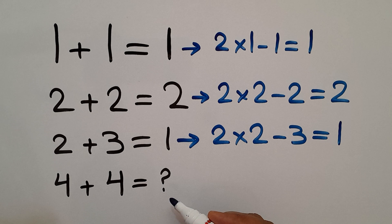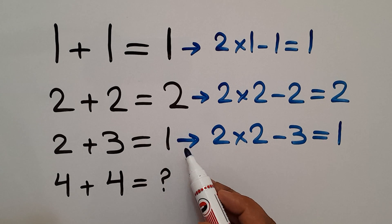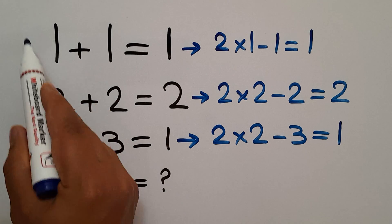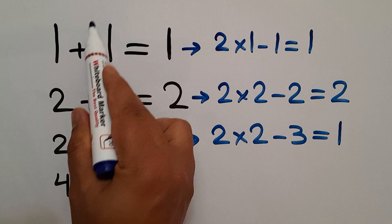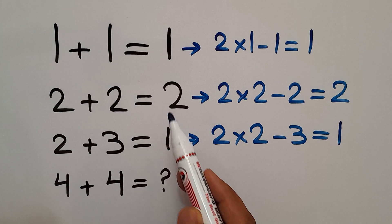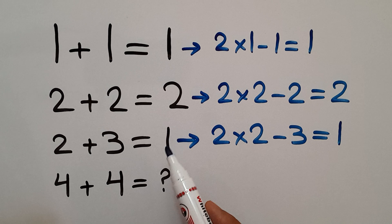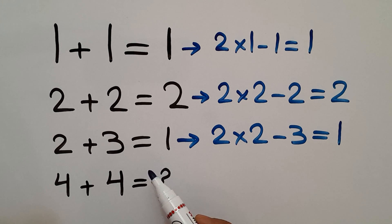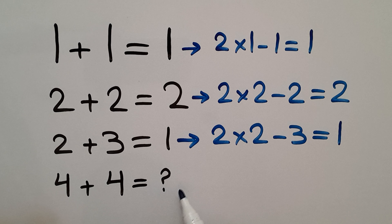So therefore, the pattern that exists here is: 2 times the first number of each line minus the second number equals the third number, or the right-hand side number. Now let's apply this pattern to find the missing number.